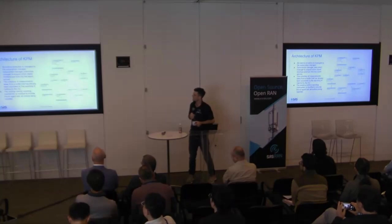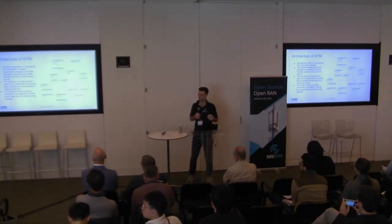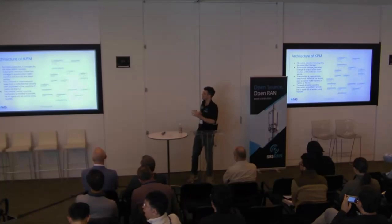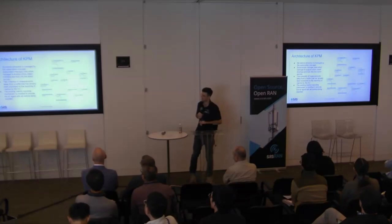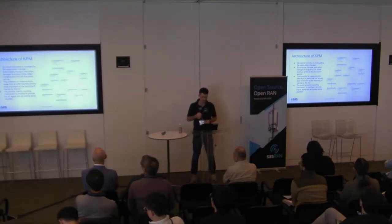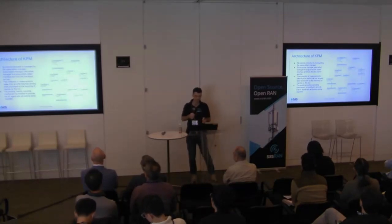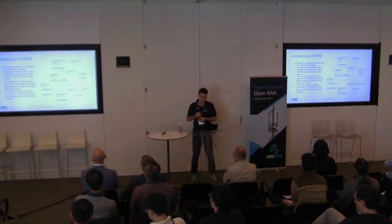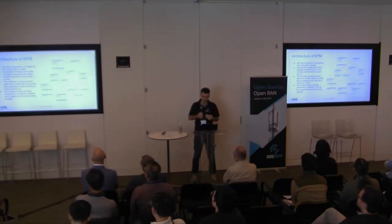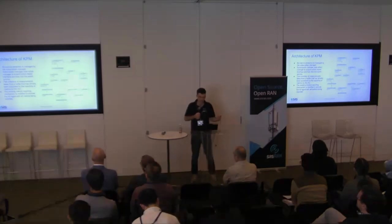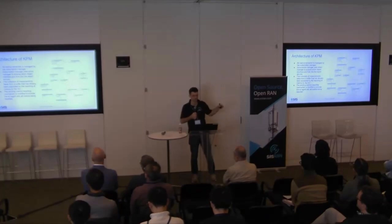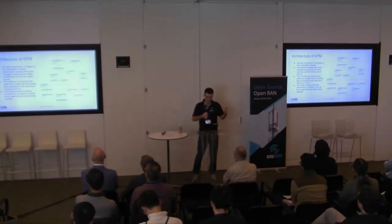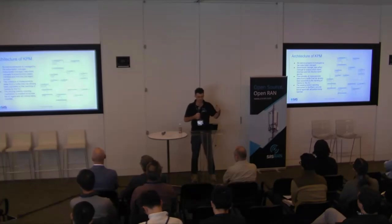The KPM is the most developed of our service models, so the architecture is the most complicated. The key aspects are the subscription manager, indication procedure, and the report service. When a subscription comes in, the subscription manager uses the initial indication procedure and the report service to extract metrics from the stack and send them to the RIC based on whatever that action is. The report service manages the actual interface between the RAN stack and the E2.